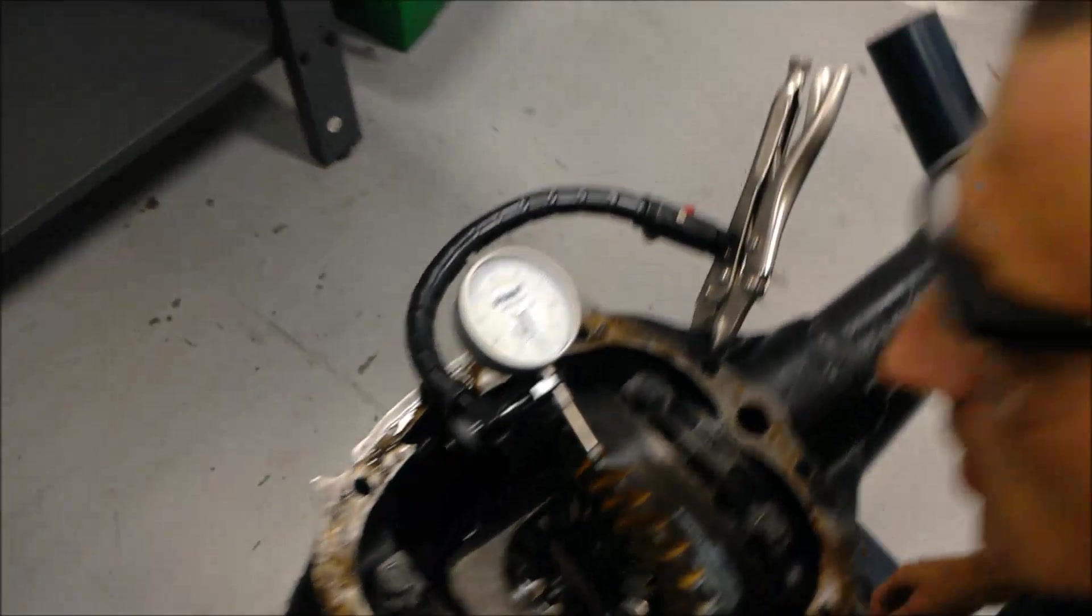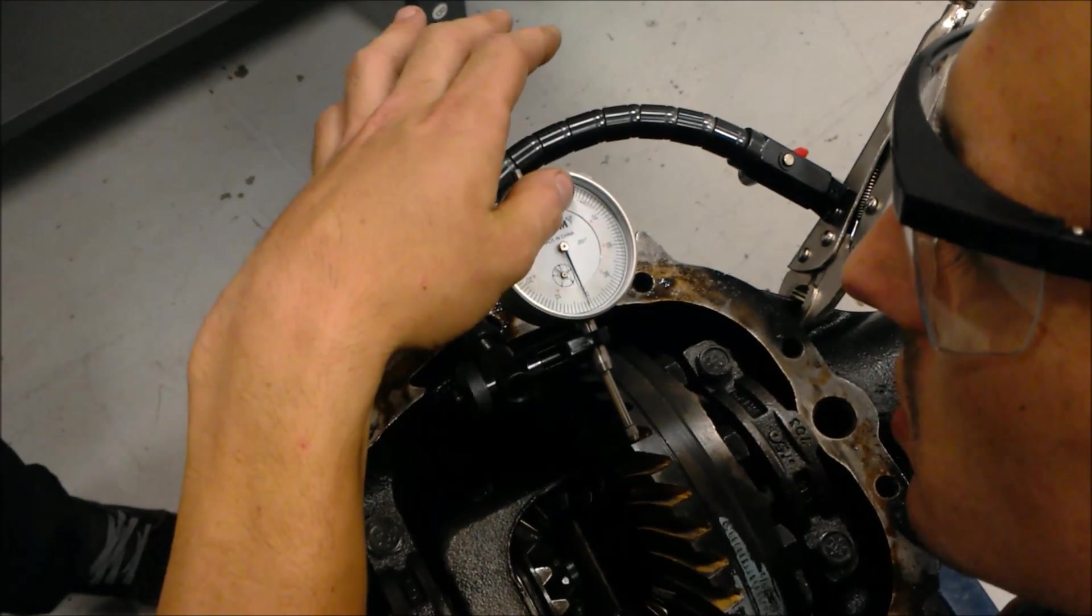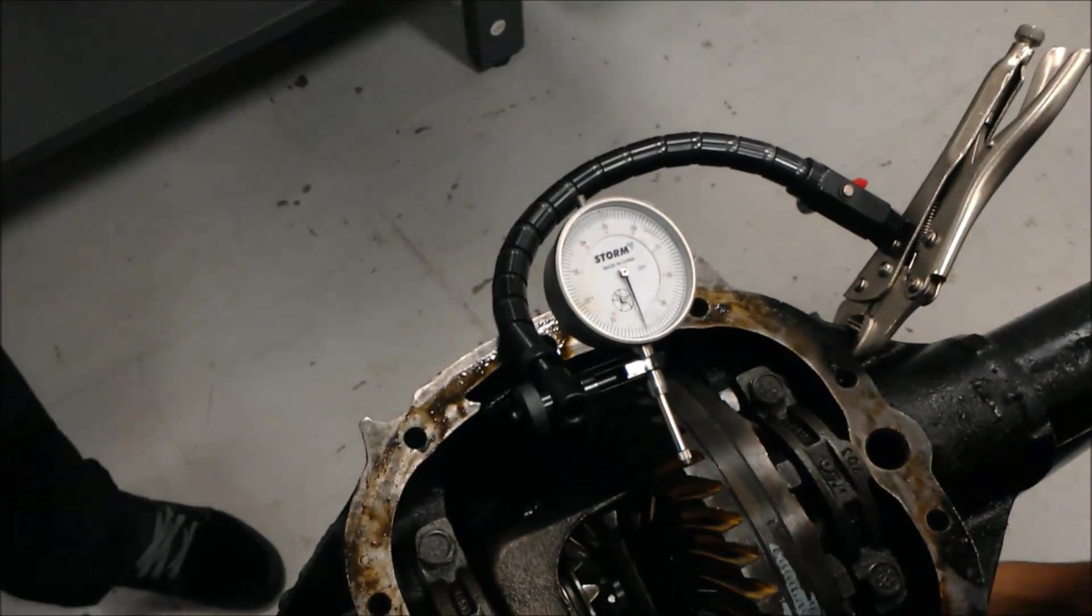Already got the dial indicator set up here on the ring gear tooth, and I got it zeroed out just about. And what we're going to do is we're just going to measure it out as we wiggle it.